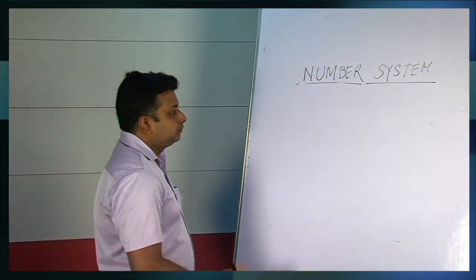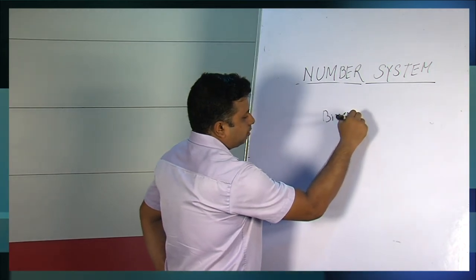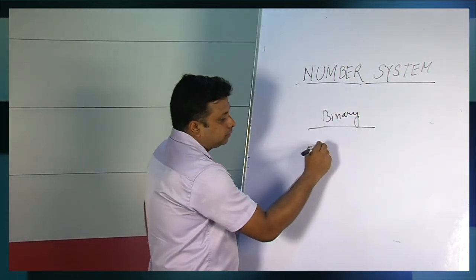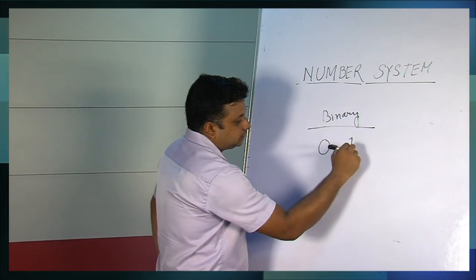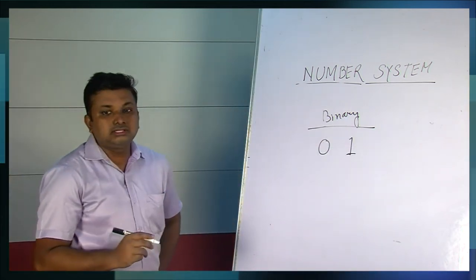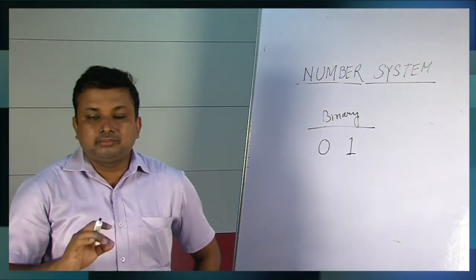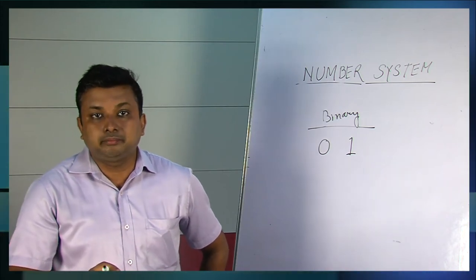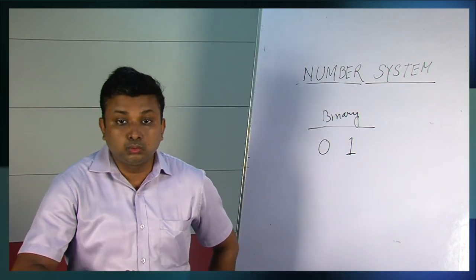Now we come to the binary number system. In binary number system there are only two digits, that is 0 and 1. The whole number system is defined using 0 and 1. And in this system the base or the radix is only 2.